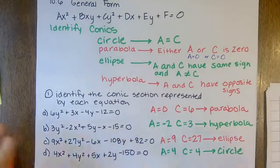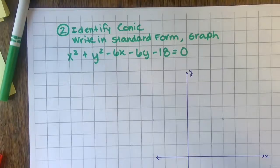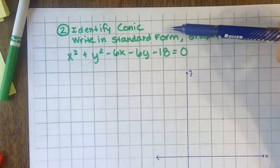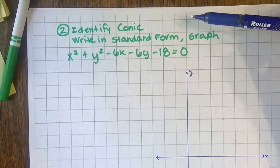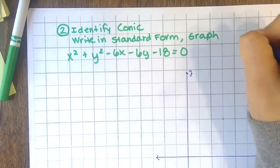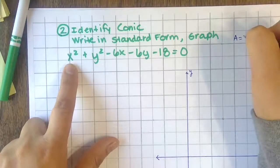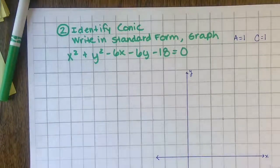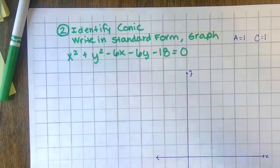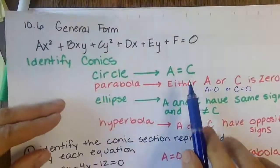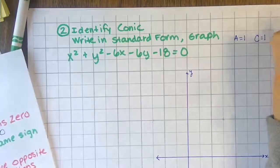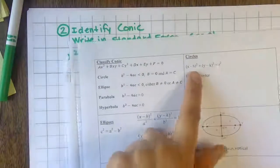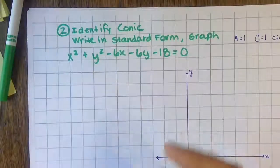Now we're going to take equations from general form, complete the square, write in standard form, and graph. First, identify the conic section: A value is one, C value is one — going back to notes, if A and C are equal, it's a circle. I'll be writing this in standard form like x minus h² plus y minus k² equals r².